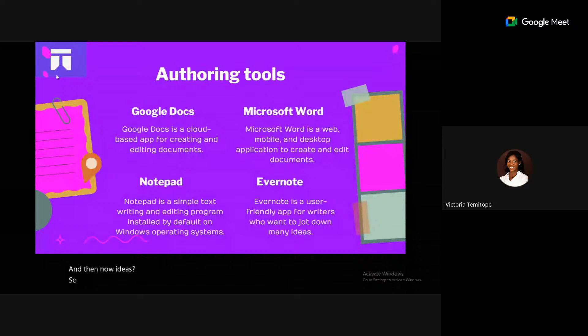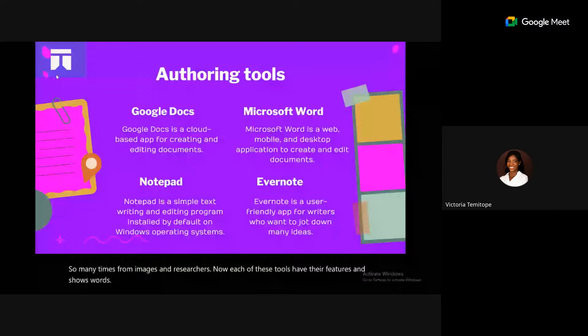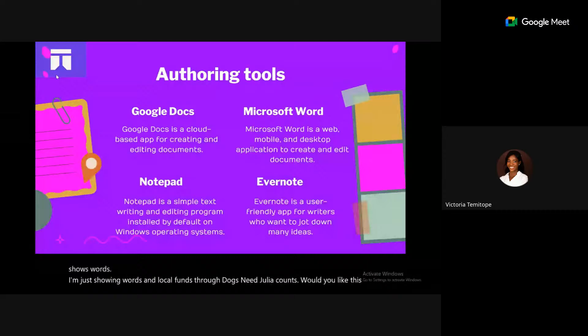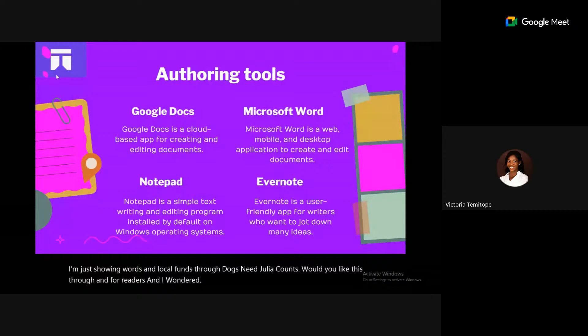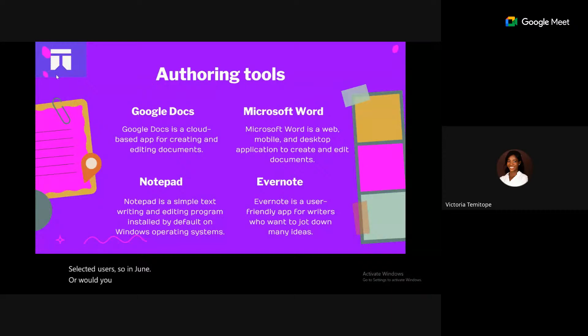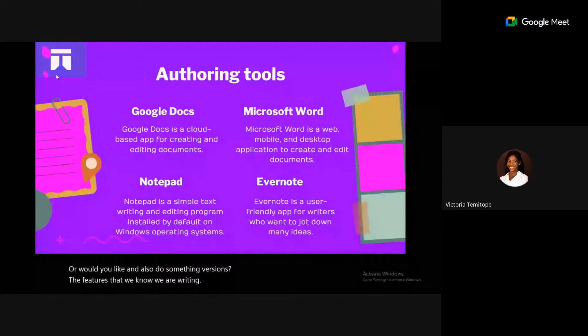Each authoring tool has its own features. Microsoft Word works as a local desktop file, Google Docs uses Gmail accounts, Notepad is free and Windows-only, and Evernote is mostly used by entrepreneurs, executives, and creatives. You choose the tool based on what you want, the interface you prefer, and the features you need. For example, if your article requires images, don't choose Notepad.